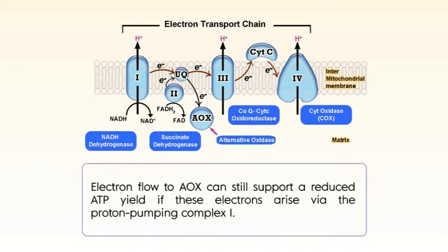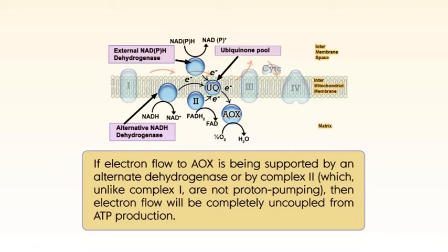Electron flow to AOX can still support a reduced ATP yield if these electrons arise via the proton pumping Complex 1. However, if electron flow to AOX is being supported by an alternate dehydrogenase or by Complex 2, which unlike Complex 1 are not proton pumping, then electron flow will be completely uncoupled from ATP production. So, plants have additional electron transport chain components that allow for a dramatic modulation of ATP yield, depending on the components of the path used for NADPH oxidation and oxygen reduction.